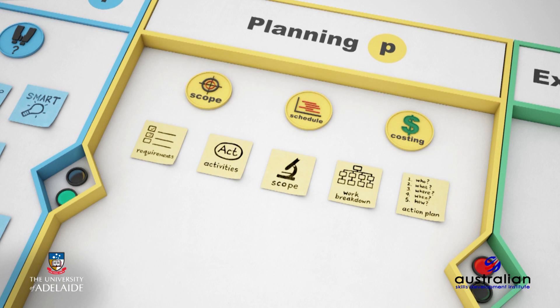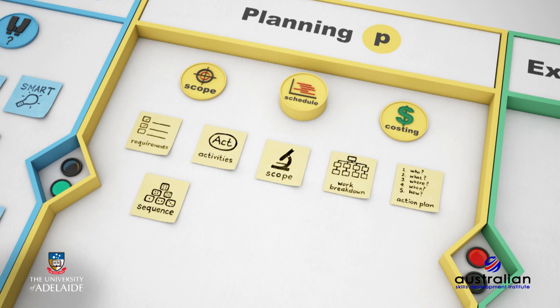Now think about how you might sequence these activities. Is there a specific order that will work best to complete all of the tasks? Which should go first and why? Think about the relationships between the activities and how they might work optimally in a particular order. You will also need to consider the dependencies for each activity before refining your schedule.